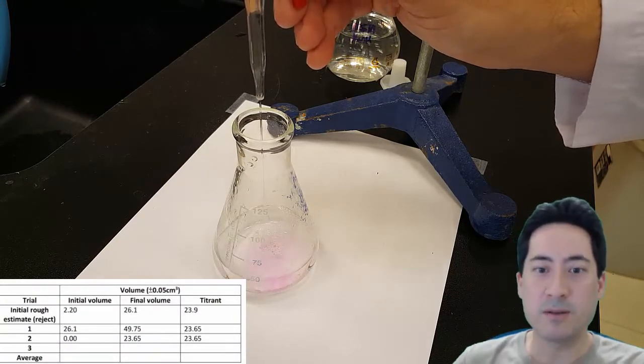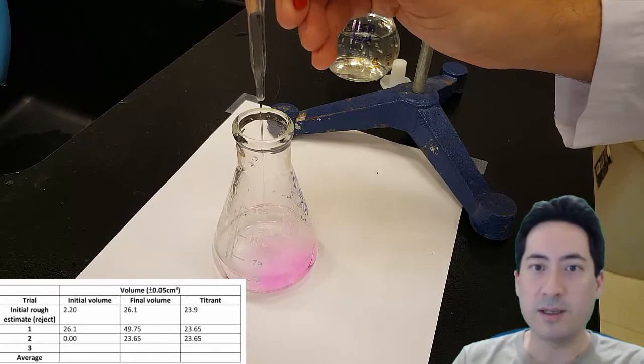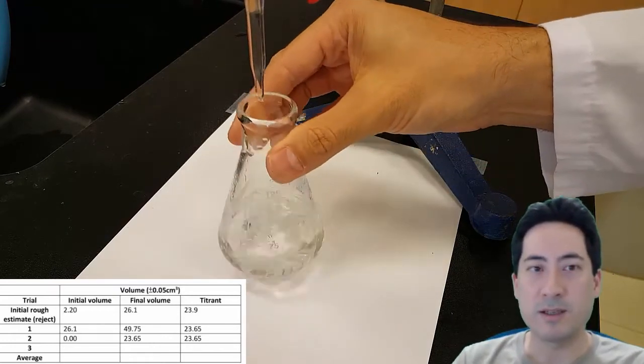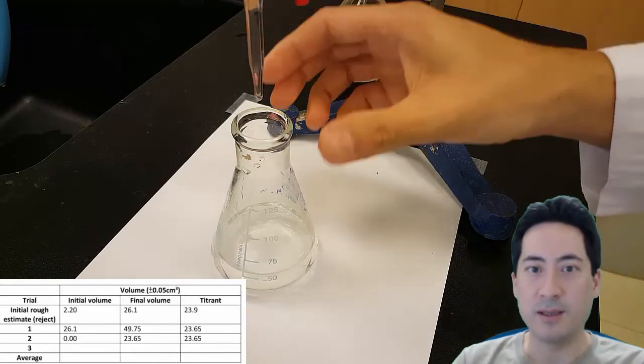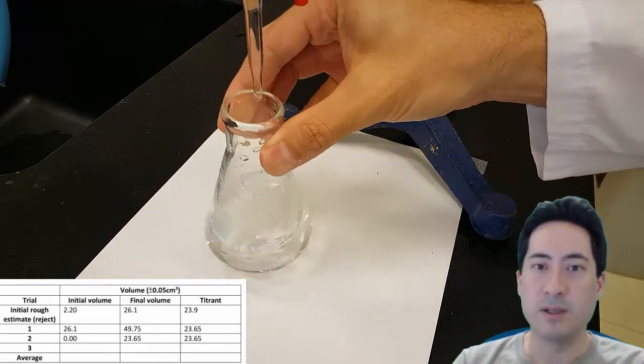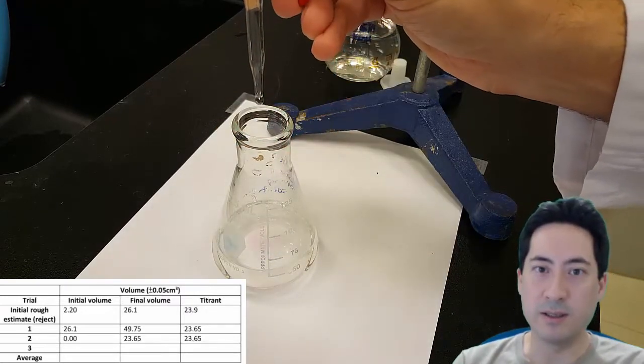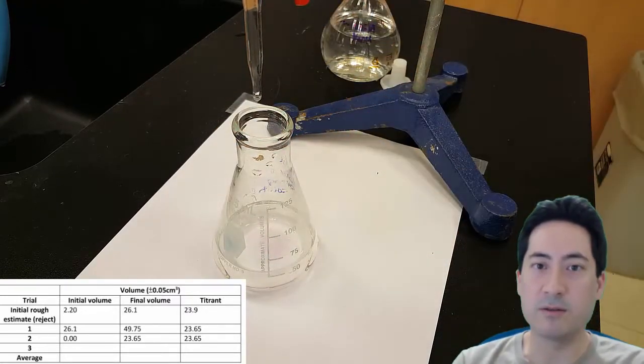And so now I'm ready to do my first trial. I can pretty much go straight away, go down to like 22 or 23. And so that's what I've done here. And then once I get to 22, I'm going to really start going slowly because I need to see what it is down to the single drop.